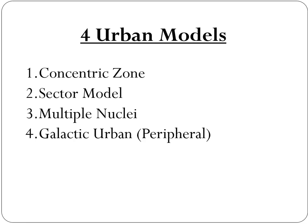We're going to look at four urban models: the concentric zone model, the sector model, the multiple nuclei model, and the galactic urban or peripheral model. Right now you need to create a foldable — fold a sheet of paper in half and then in fourths, and take notes on each model. On the front write the model name and draw the picture, which can be found and traced from your textbook.